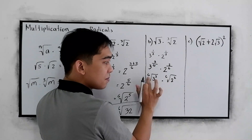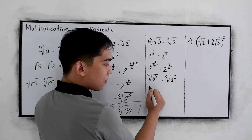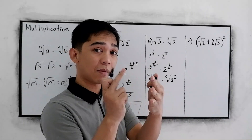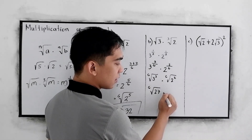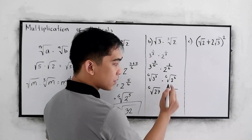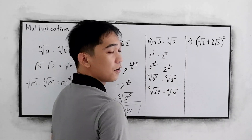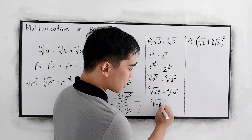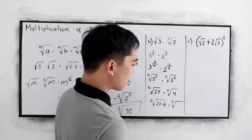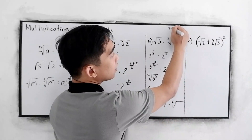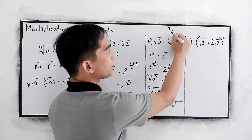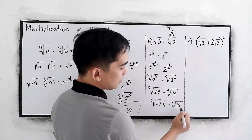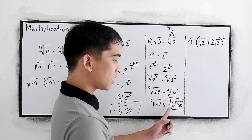Writing back to radical form, this becomes the 6th root of 3 cubed times the 6th root of 2 squared. Notice we now have the same index. So we have 6th root of 3 cubed, which is 3 times 3 times 3 equals 27, times 6th root of 2 squared, which is 4. Following our principle, we have the 6th root of 27 times 4. Our final answer is the 6th root of 108.